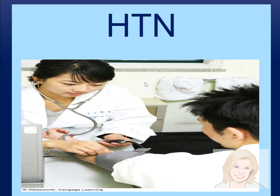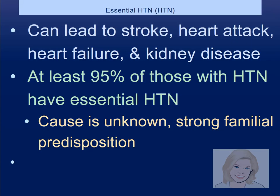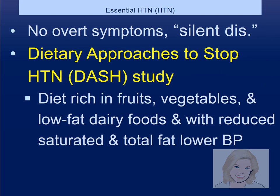Hypertension: can you tell if you have high blood pressure? Essential hypertension can lead to stroke, heart attack, heart failure, or kidney disease. At least 95% of patients with hypertension have essential hypertension — we don't know the exact cause, though there's a family tendency. It has no overt symptoms; often a TIA or stroke might be the first sign if someone doesn't seek medical care. Nutrition is the approach: the DASH diet — dietary approaches to stop hypertension — emphasizes fruits, vegetables, low-fat dairy, and reducing saturated fat.